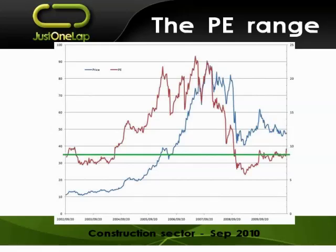Here's an example, and I've got a couple of examples to come up with, then I'll show you the practicalities of how I get to one. This is a PE range of the construction sector. I did it in September 2010. What I'm doing with the PE range: the blue line is the index value, the reddish line is the PE, and then the green line gives me an indication of where we're finding it when it's kind of cheap.